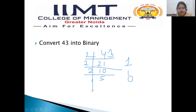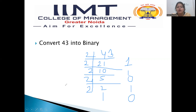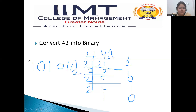Then we will divide 5 by 2 — it will go 2 times and the remainder will be 1. So the answer, written from downward to upward, will be 1, 0, 1, 0, 1, 1 to the base 2. So this is 43 written in binary language.